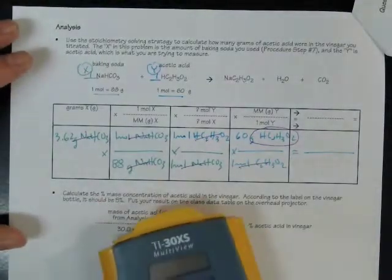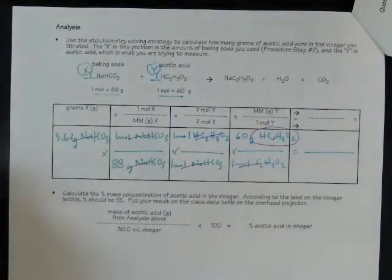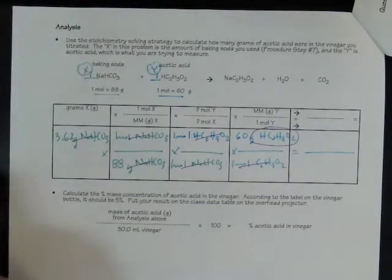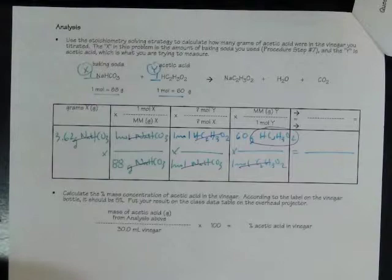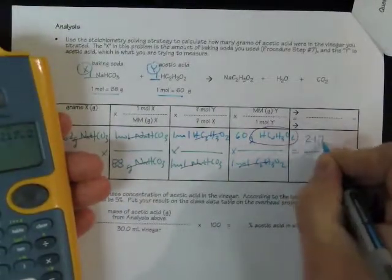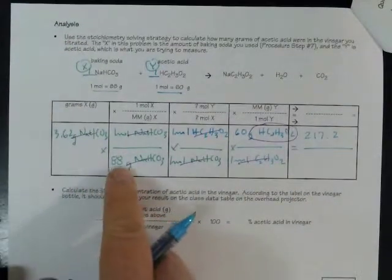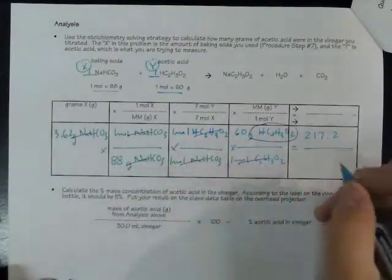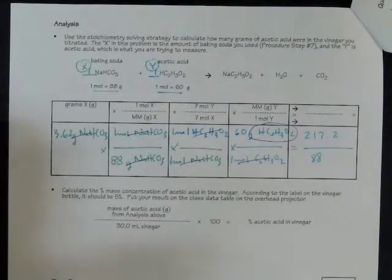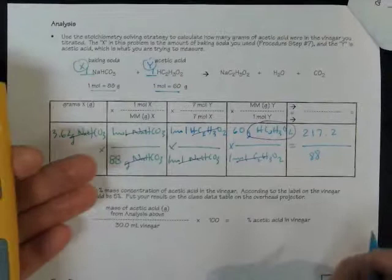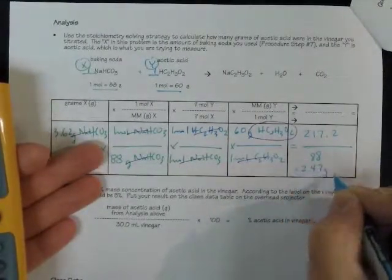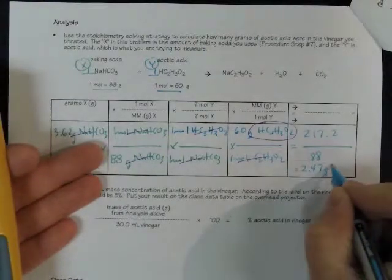Now do the math. I'll multiply across the top. I'll write that down. So 3.62 times 1 times 1 times 60. 217.2. Then I'll multiply across the bottom. 84 times 1 times 1. That's easy. That's 84. And then the top divided by the bottom. And I'm going to write down 2.47. 2.47 grams of acetic acid.